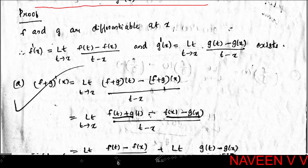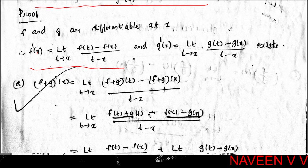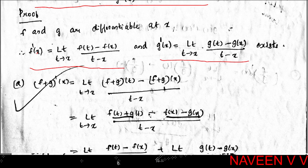By definition, f is differentiable at x means: limit as t→x of [f(t) - f(x)] / (t - x) = f'(x). Similarly, g differentiable at x means: limit as t→x of [g(t) - g(x)] / (t - x) = g'(x).